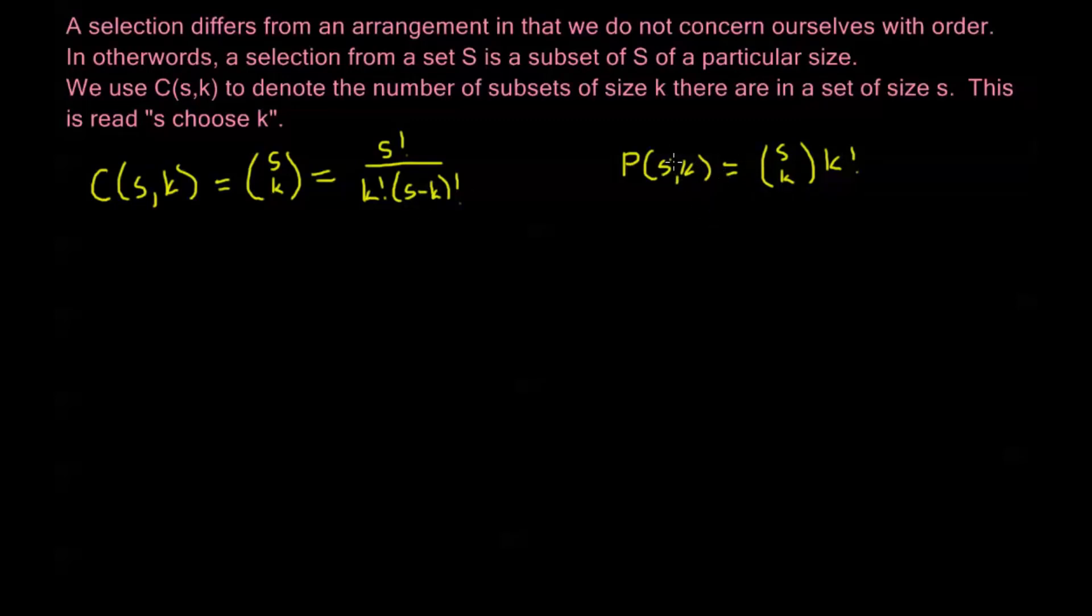We knew that our permutation function was equal to S factorial over S minus K factorial. So dividing by K factorial we get this closed formula for our choice function or our selection function S choose K.